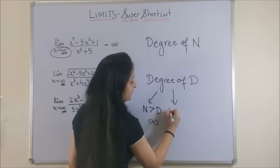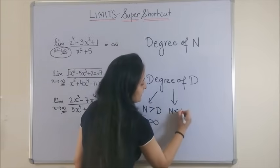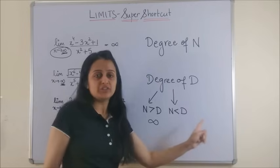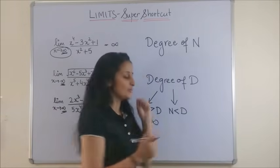However, if the numerator, the degree is smaller than the degree of the denominator, the answer is simply a 0.